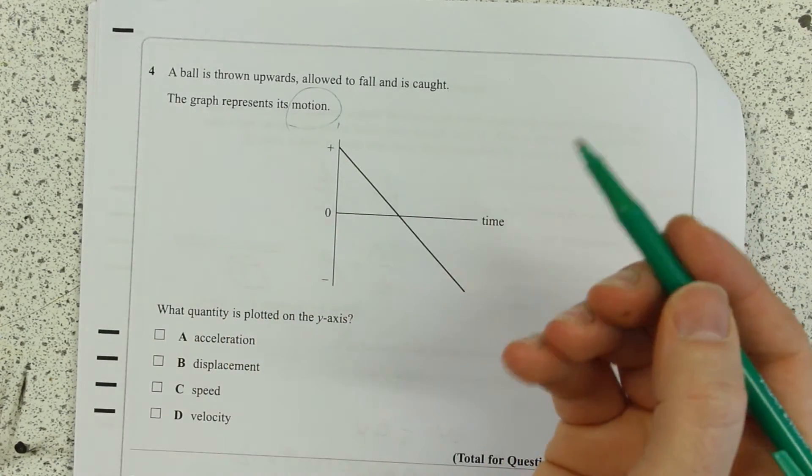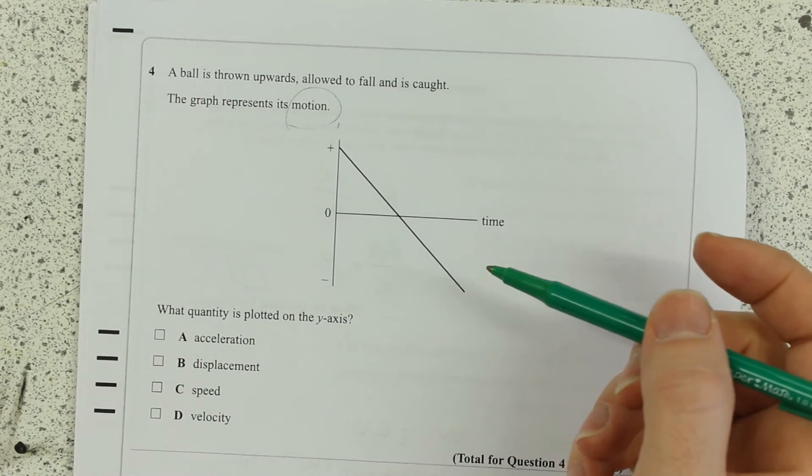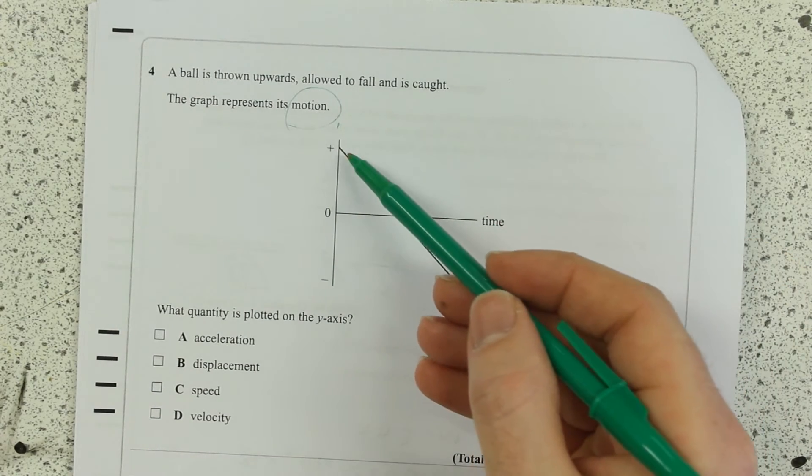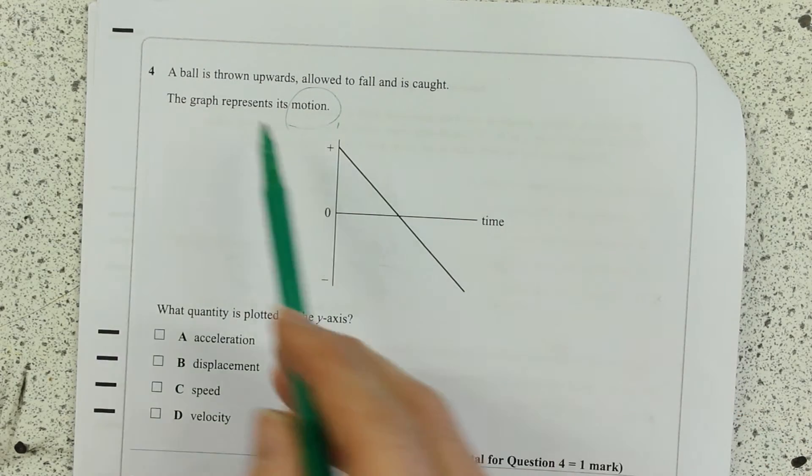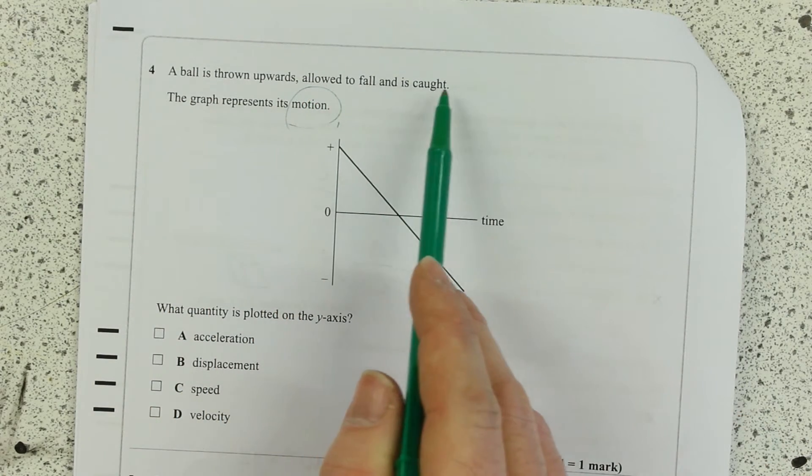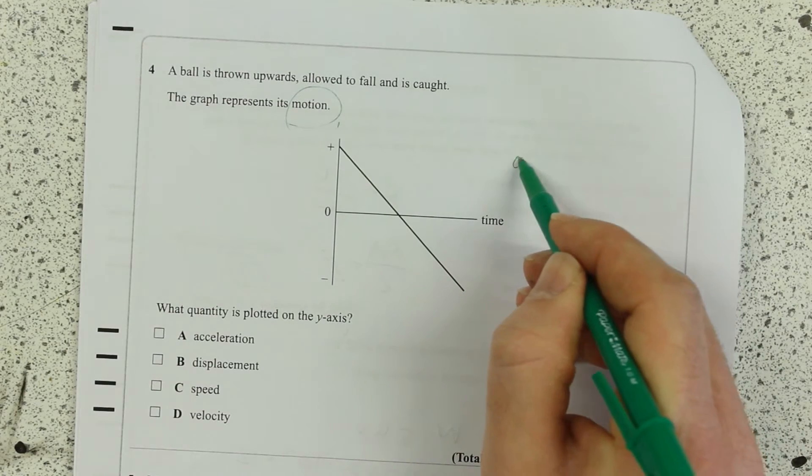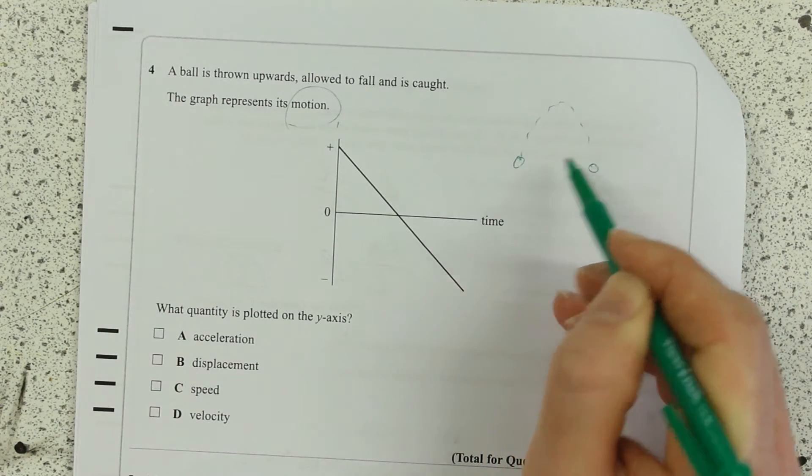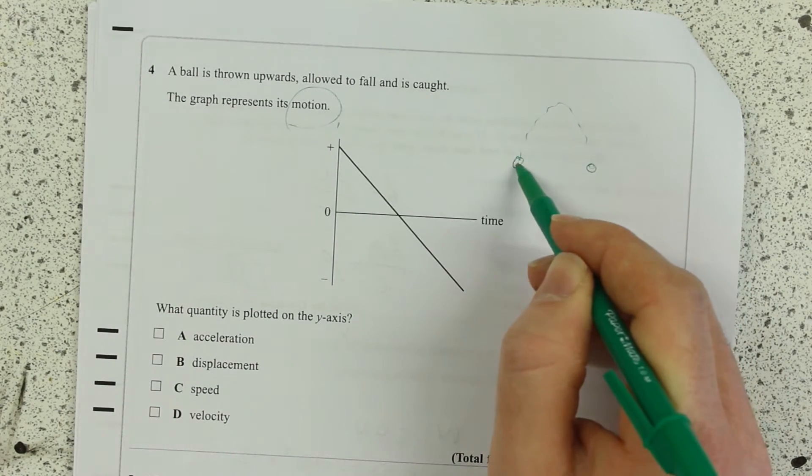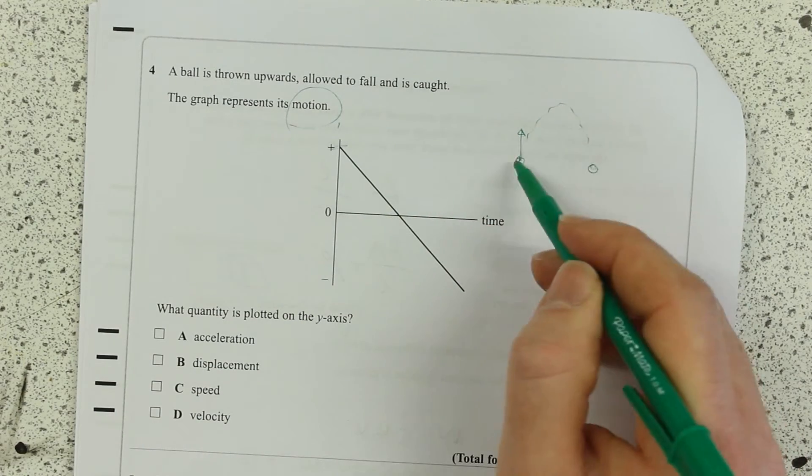thinking motion. I'm thinking of my standard sawtooth graph under gravity with constant gradient. Thrown upwards, allowed to fall, and caught - so it's doing this. Its velocity starts at a high positive velocity,